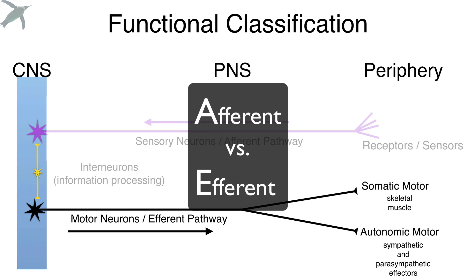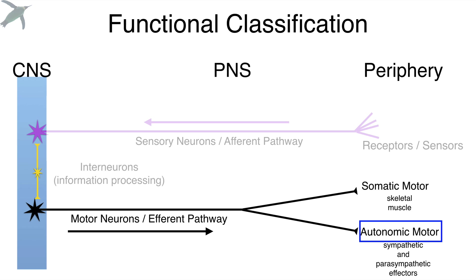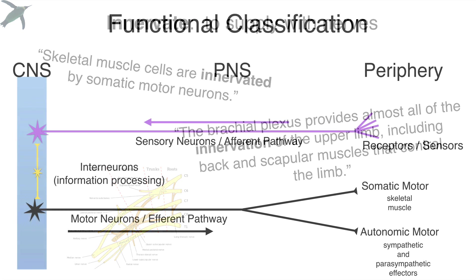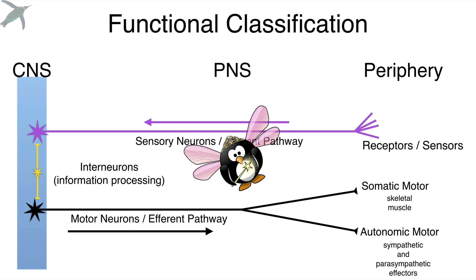Pay attention: afferent and efferent differ by only one letter but mean dramatically different things. Motor neurons are classified as either somatic motor, which innervates skeletal muscle, or autonomic motor neurons, which innervate everything else — all autonomic effectors, things you don't have voluntary control over. Innervation simply means to supply with nerves, so somatic motor neurons innervate skeletal muscle just means those neurons talk to or send information to skeletal muscle.